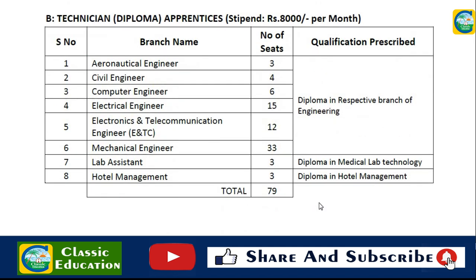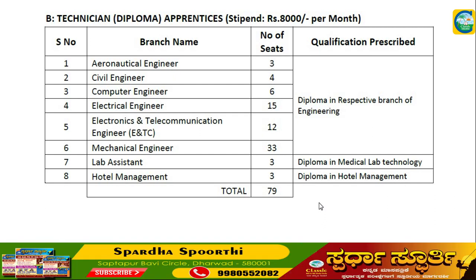Diploma – Technician Diploma Apprentice. The available branches are: Aeronautical Engineering with 3 vacancies, Civil Engineering with 4 vacancies, Computer Engineering with 6 vacancies, Electrical Engineering with 10 vacancies, Electronics and Telecommunication Engineering with 100 vacancies, Mechanical Engineering with 3 vacancies, Lab Assistant with 3 vacancies, Hotel Management with 3 vacancies. Total vacancies are 79. Diploma in respective branch is eligible.